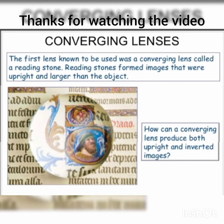This is like a reading stone — it forms images that are upright and larger than the object, so we can see things in larger size with an upright image. Hopefully this topic is clear. In the next lecture we will discuss the ray diagram for the diverging lens. Till then, Allah Hafiz.